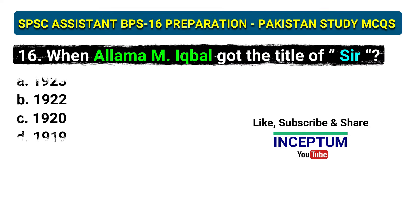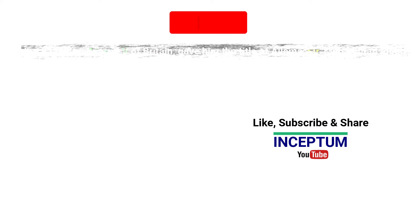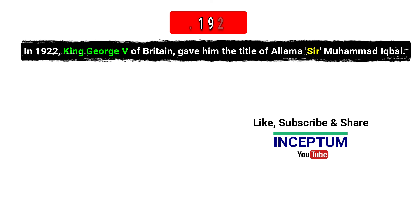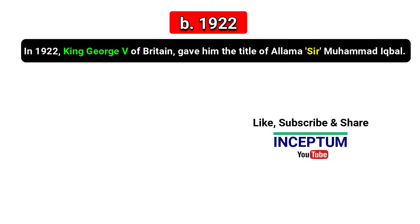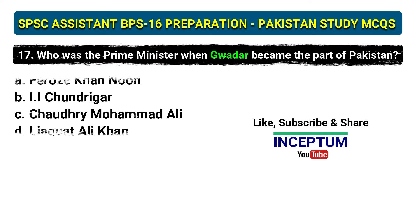Question 16: When did Allama Muhammad Iqbal receive the title of Sir? Options: 1923, 1922, 1920, 1919. The correct answer is option B, 1922. In 1922, King George V of Britain conferred upon him the title of Sir Muhammad Iqbal.